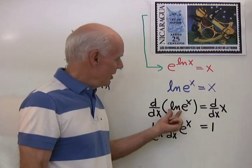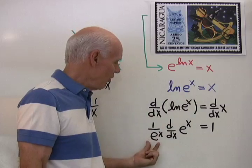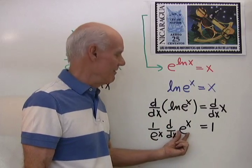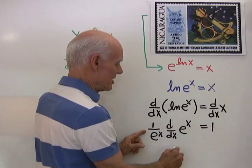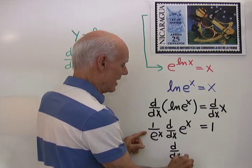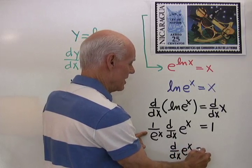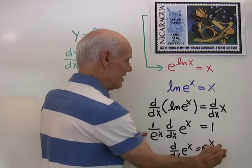So the derivative of natural log e to the x is 1 over e to the x times the derivative of e to the x. Well look, I'll multiply both sides here by e to the x and I get this. The derivative with respect to x of e to the x is equal to e to the x.